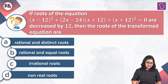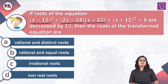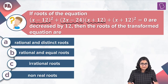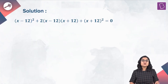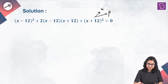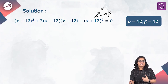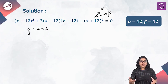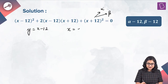In this question, we have been given a quadratic equation: (x minus 12) whole squared plus 2(x minus 24)(x plus 12) plus (x plus 12) whole squared equal to 0. The roots of this quadratic equation are decreased by 12 and a new transformed equation is formed; we have to comment about the roots of that new equation. If we assume it has roots alpha and beta, we frame a quadratic with roots alpha minus 12 and beta minus 12, so we put y equal to x minus 12, giving x equal to y plus 12.